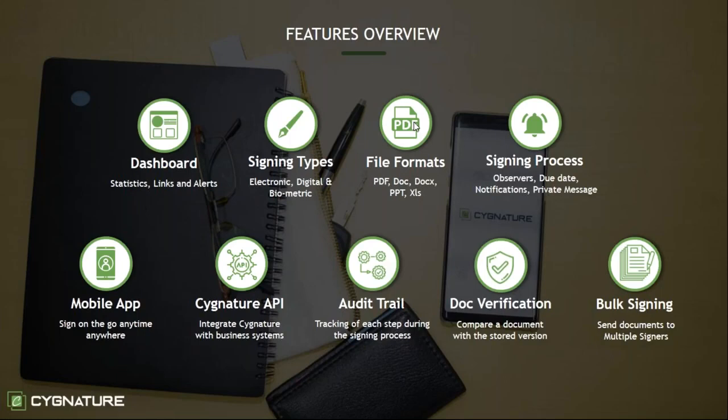The newest feature is document verification, where you can verify the document before signing. If you want to verify whether a document is the same one you agreed to sign, you can do so — and even a minor change like a full stop will be flagged, showing you that the document has been tampered with. Another feature is bulk signing, where you can send a common document to any number of signers at a time.